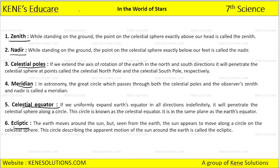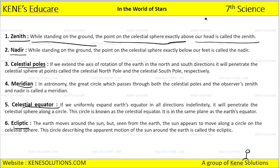What is the zenith? While standing on the ground, the point on the celestial sphere exactly above the observer's head is called zenith. You are standing here, and the point on the celestial sphere exactly on our head — that point is zenith.